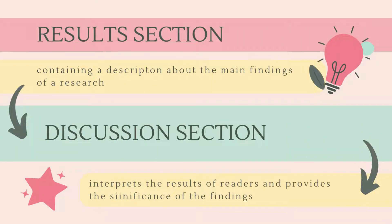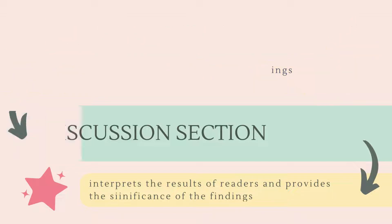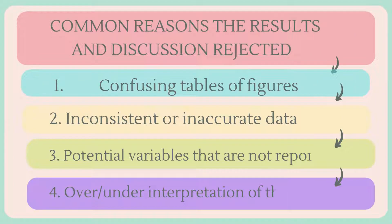The results section is a section containing a description about the main findings of a research, whereas the discussion section interprets the results for readers and provides the significance of the findings. This section should not repeat the results section. Some of the common reasons the results and discussion sections might cause reviewers to reject a manuscript are: confusing tables or figures, inconsistent or inaccurate data, potential variables that are not reported, and over or under interpretation of the results.